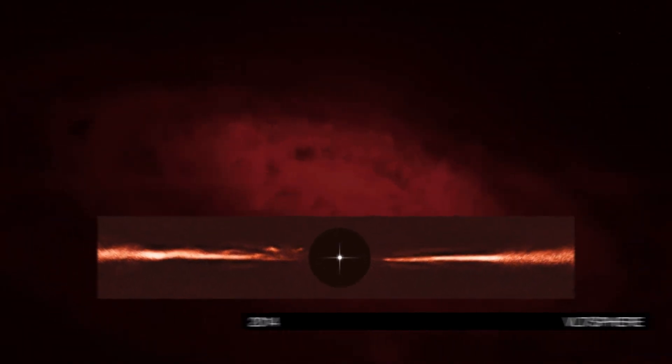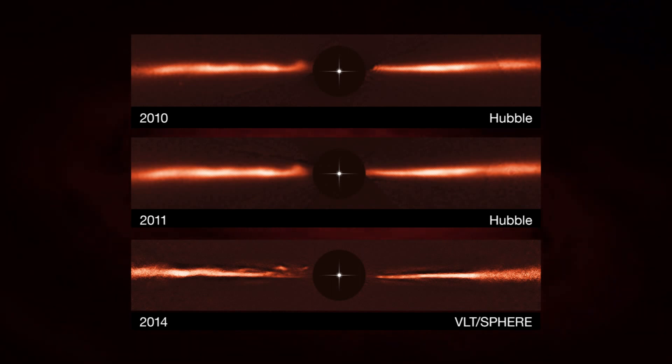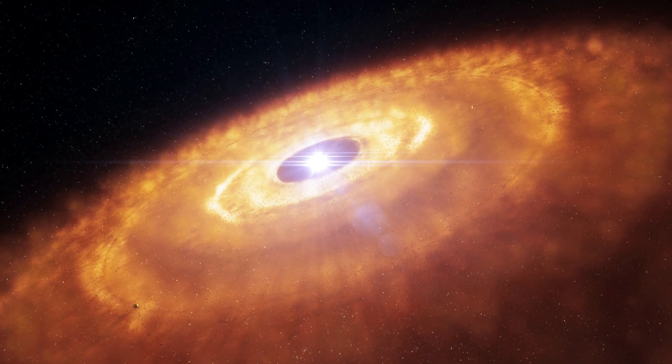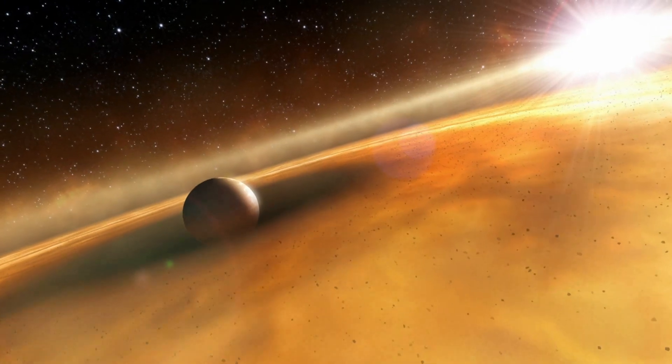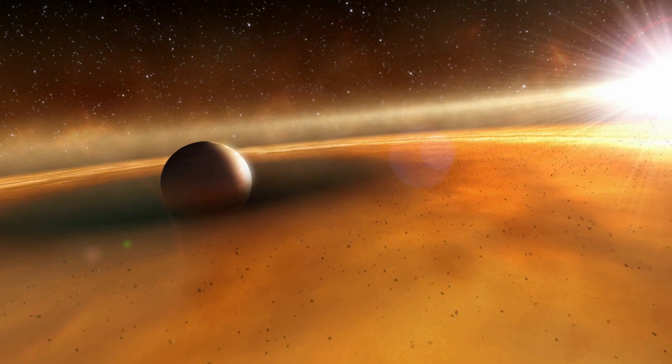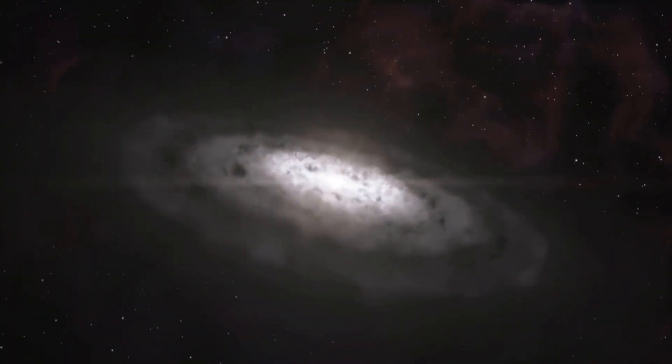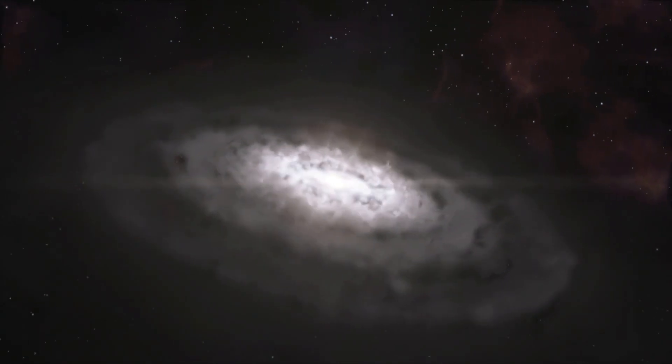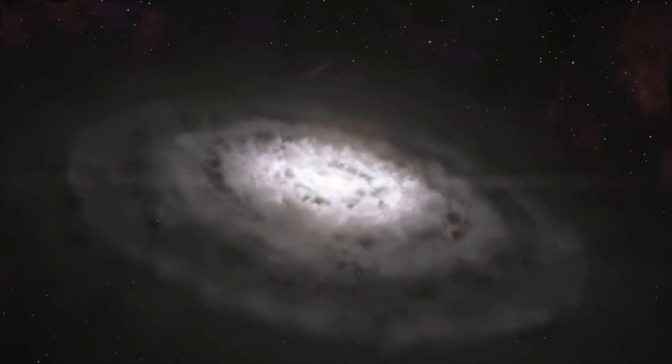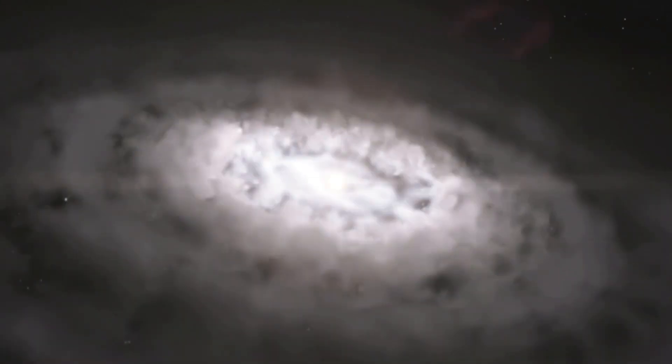The astronomers compared the SPHERE data with images of the disk taken by Hubble in 2010 and 2011. The comparison showed that these ripples were moving, and moving very fast. At least three of the features are moving so fast that they're escaping from the gravitational pull of the star. Such high speeds rule out the possibility that these are conventional disk features caused by planets disturbing material in the disk while orbiting the star. There must have been something else involved to speed up the ripples, meaning they're a sign of something truly unusual.